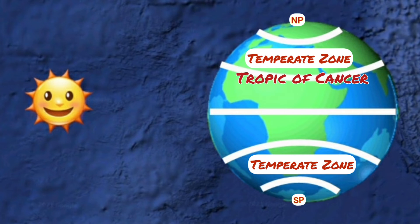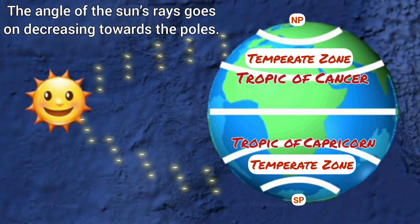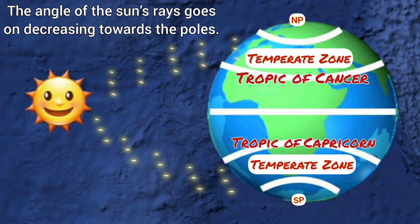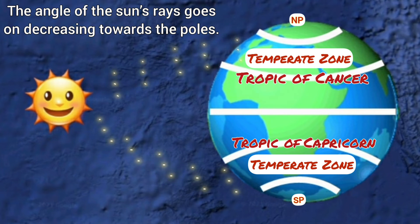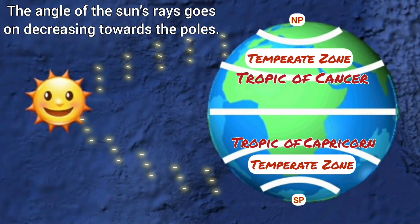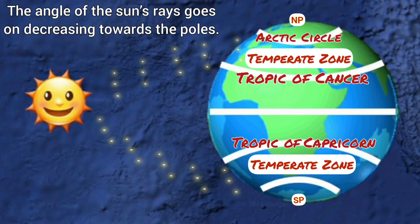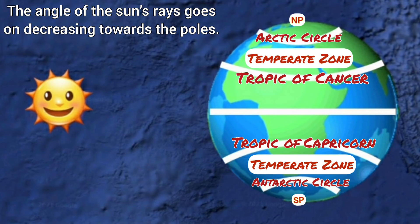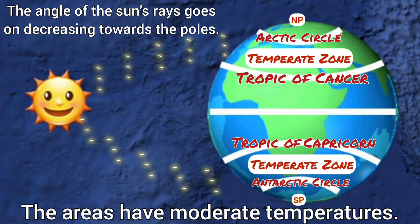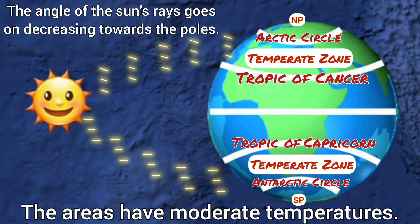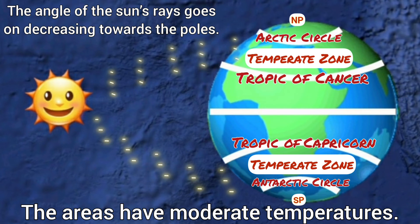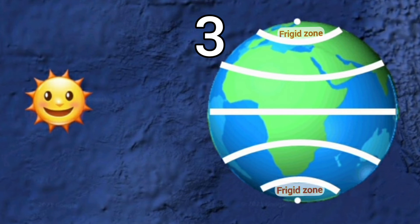The second one is the Temperate Zone. All places beyond the Tropic of Cancer and the Tropic of Capricorn receive slanting rays of the sun. The angle of the sun's rays goes on decreasing towards the poles, due to which the areas bounded by the Tropic of Cancer and the Arctic Circle in the northern hemisphere, and the Tropic of Capricorn and the Antarctic Circle in the southern hemisphere, have moderate temperature. These are therefore called Temperate Zones.